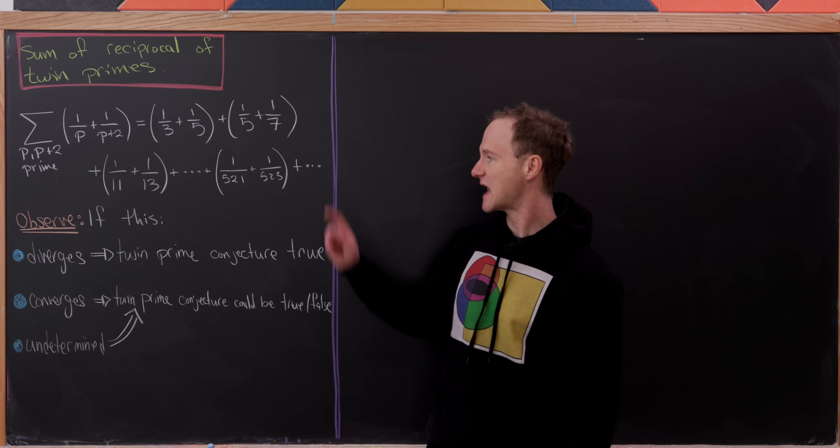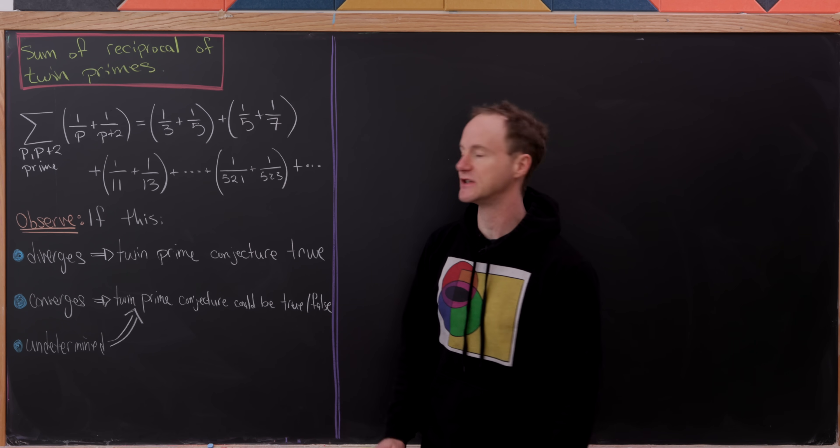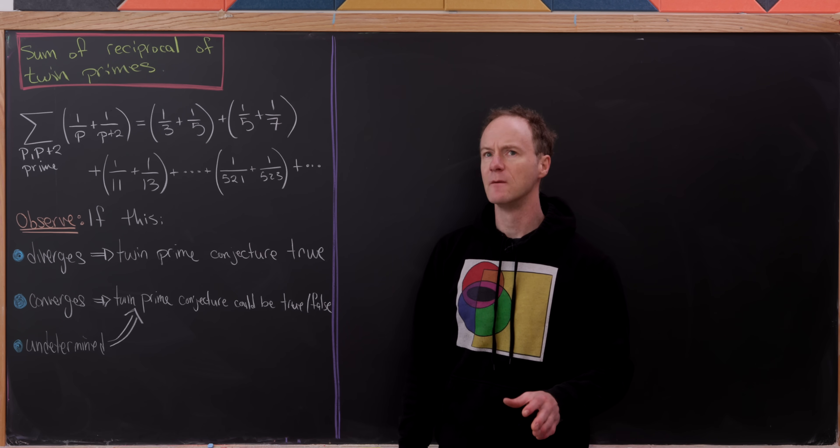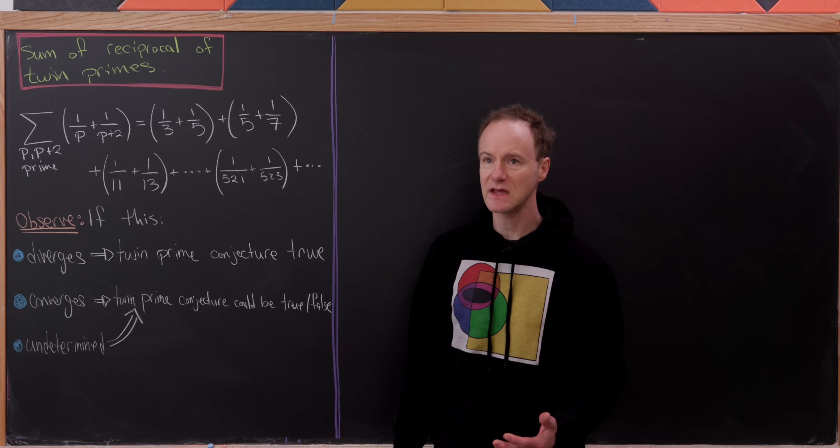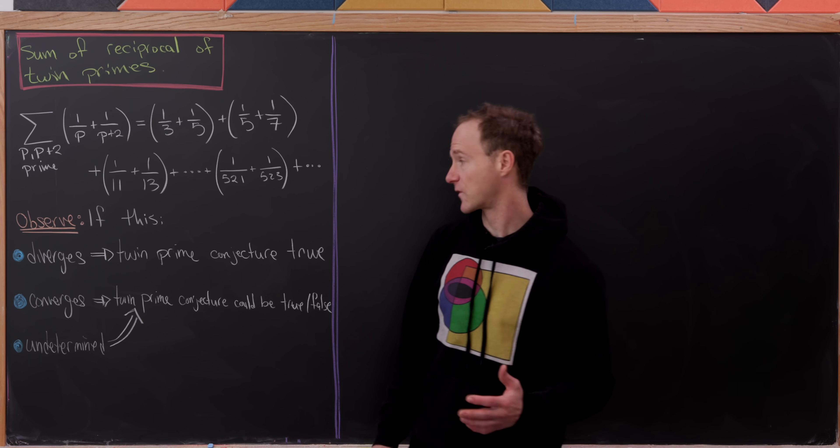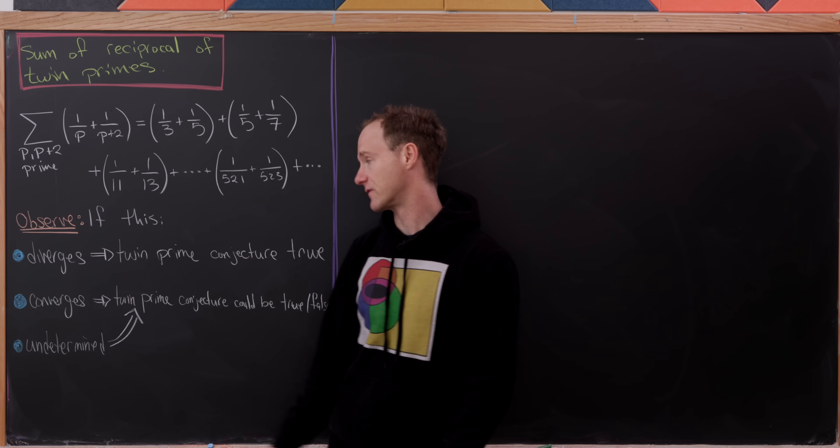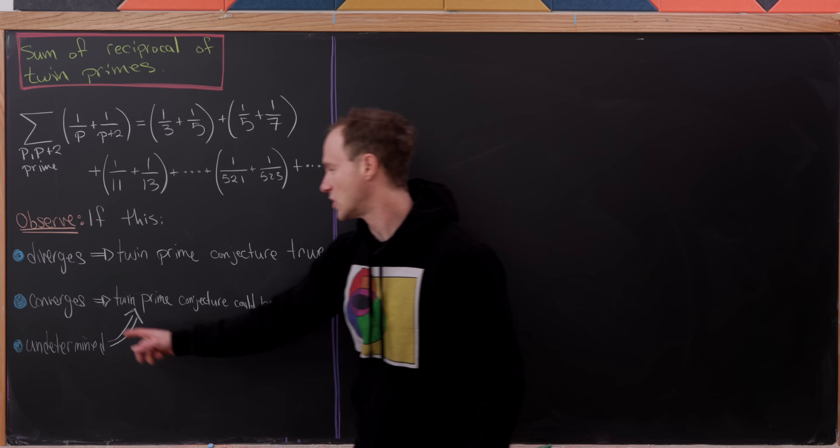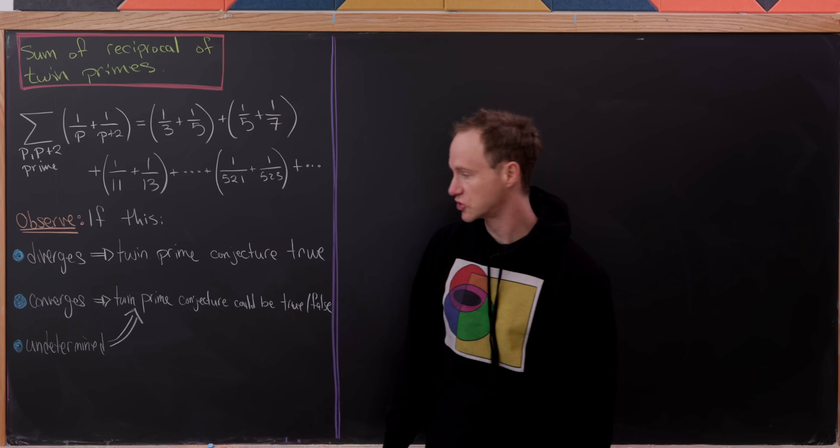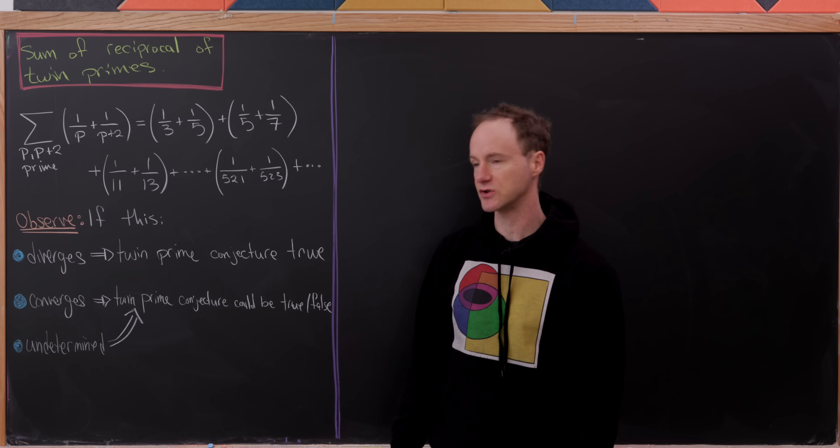But if this has infinitely many terms, then the twin prime conjecture is true, but the twin prime conjecture is not proven. So that means that we must not know for sure that it diverges. That leaves us two possibilities.